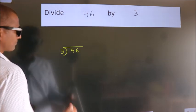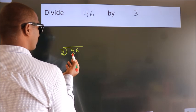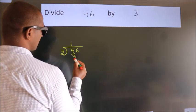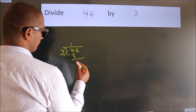Next, here we have 4, here 3. A number close to 4 in the 3 table is 3 once, 3. Now we should subtract. We get 1.